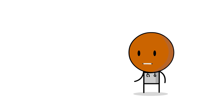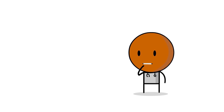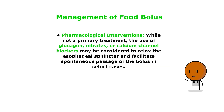Oftentimes, a gastroenterologist is not right around the corner in the emergency department, so there are some pharmacological interventions that can be initiated. While not a primary treatment, the use of glucagon may be considered to relax the esophageal sphincter and facilitate spontaneous passage of the bolus in select cases. Nitrates and calcium channel blockers may also be used.